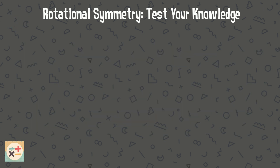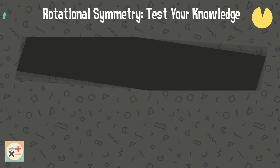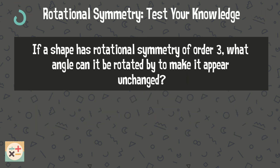Question 5: If a shape has rotational symmetry of order 3, what angle can it be rotated by to make it appear unchanged? Pause the video while you answer this question.